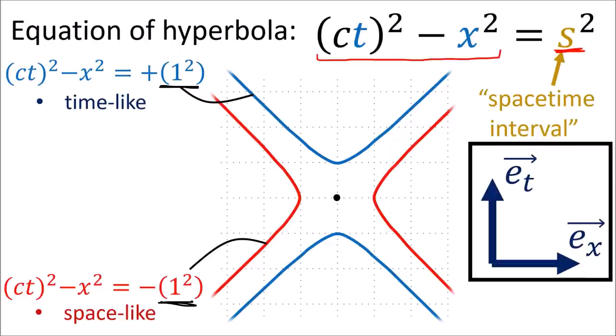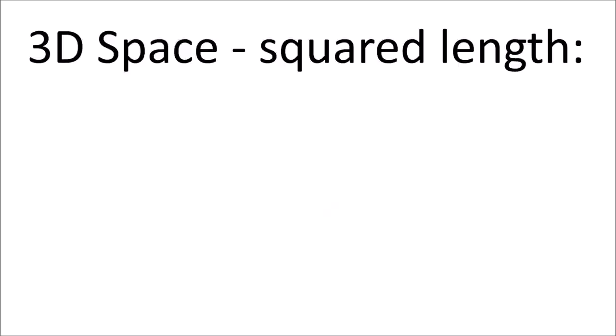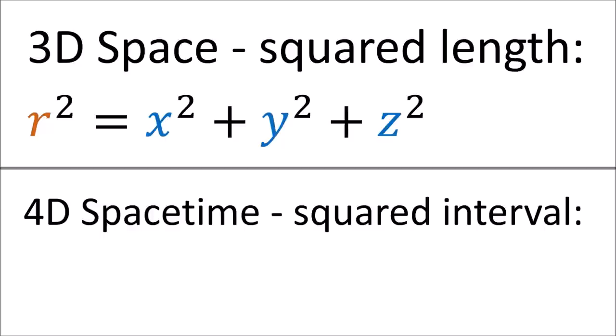When s squared is zero, the time-coordinate equals the space-coordinate, tracing out the straight-line paths of light beams. These curves have many names such as null, isotropic, or light-like curves. In three-dimensional space, the squared length formula extends accordingly.